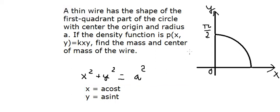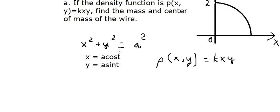Next, we can put rho(x,y), that's about kxy. We change x and y into this one. This one we can change into k a square over 2 sin 2t.